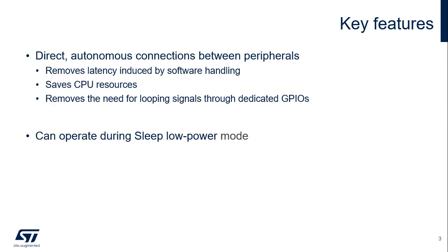The interconnect matrix offers two main features. First, it ensures direct and autonomous connections between peripherals, allowing removal of latency in regards to software handling, thus saving GPIO and CPU resources. Secondly, the interconnection between peripherals operates during sleep mode.